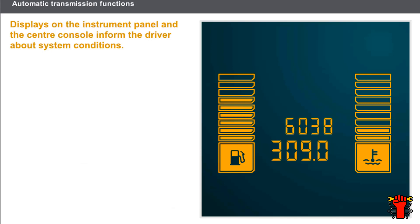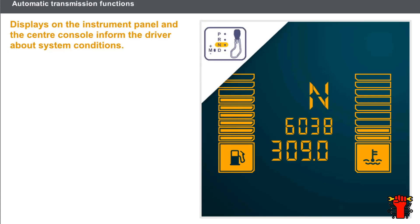Displays on the instrument panel and the centre console inform the driver about system statuses. Warning lights indicate which gear is engaged and which driving mode is selected. The pedal symbol illuminates when the driver needs to press the brake pedal, for example to unlock the lever. The lever symbol illuminates when the driver needs to put the lever in the Park or Neutral position, for example to start the engine. Various symbols also inform the driver if there is a fault in the system.